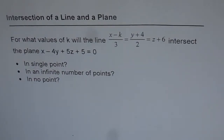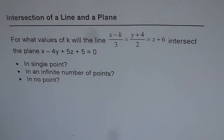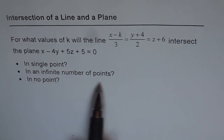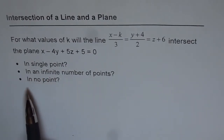Intersection of a line and a plane. For what values of k will the line (x minus k)/3 = (y plus 4)/2 = (z plus 6) intersect the plane x minus 4y plus 5z plus 5 equals 0 in a single point, in an infinite number of points, and in no point?